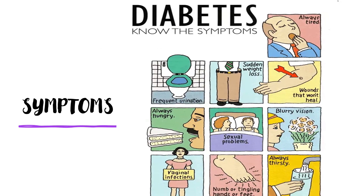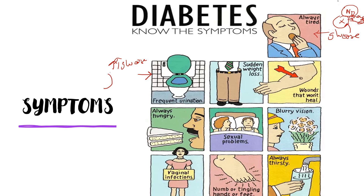Thankfully, there are a few symptoms that help us diagnose a patient with diabetes. The patient is always tired because the glucose is unable to enter the cell, due to which no energy is generated, and the body is always fatigued. There is frequent urination — this happens because when there is a lot of glucose in the bloodstream, there is a signal to the kidney to filter this glucose out of the body. A lot of water goes out with this, causing frequent urination, and the person feels thirsty all the time.